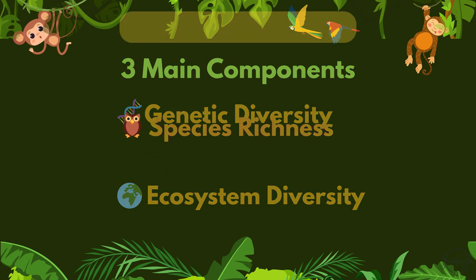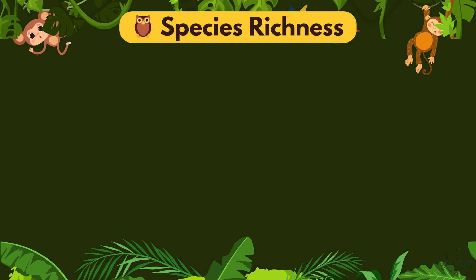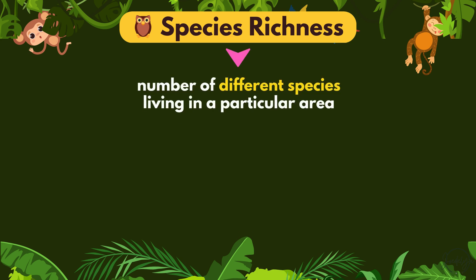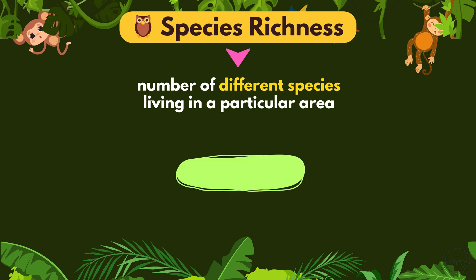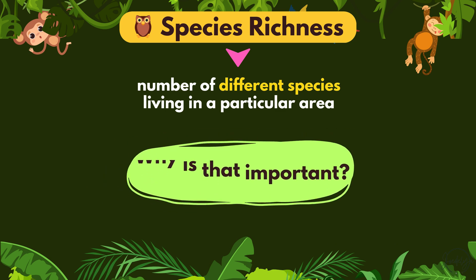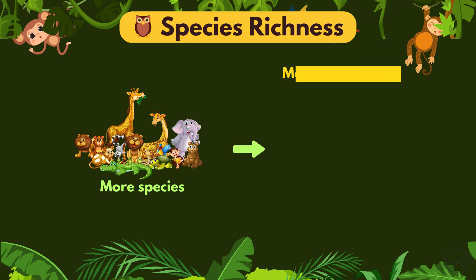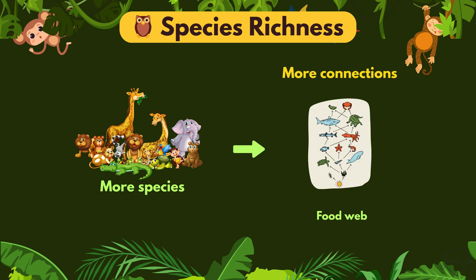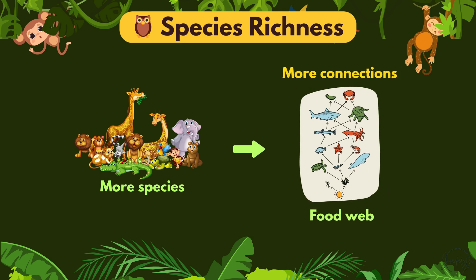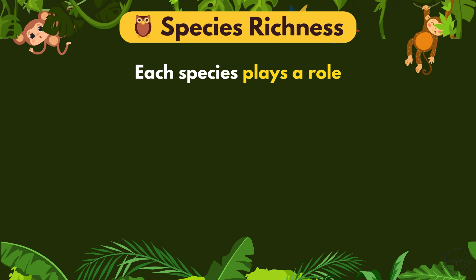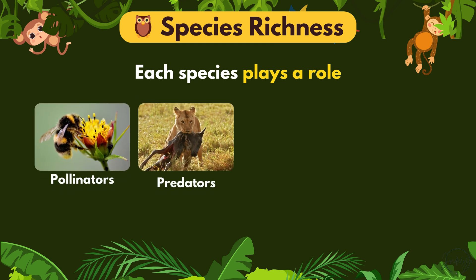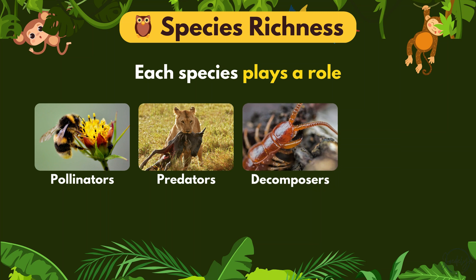Next, we explore species richness — the number of different species living in a particular area. Why is that important? Because more species means more connections in the food web. Each species plays a role: some are pollinators, some are predators, some are decomposers, and some are prey.